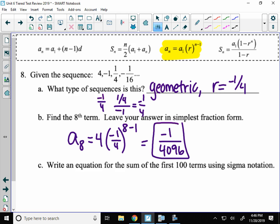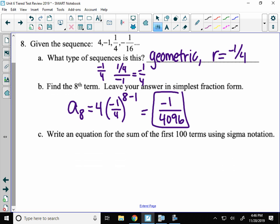And finally, write the equation for the sum of the first 100 terms using sigma notation. You don't have to evaluate. You just have to write it in sigma notation. First 100 terms means you start at term 1, go up to term 100. Then you write your equation. So what was our equation right here? We had 4 times negative 1 fourth to the n minus 1. And that's the whole thing.